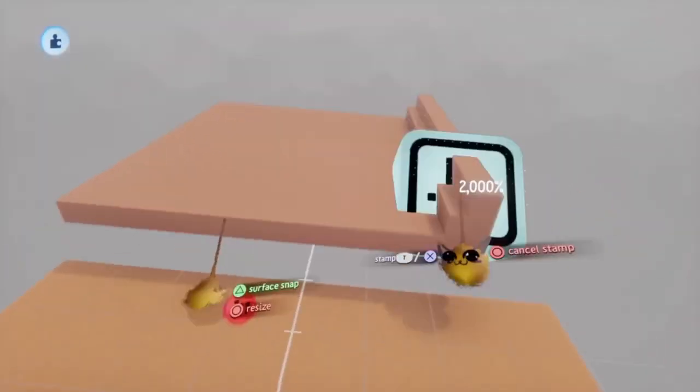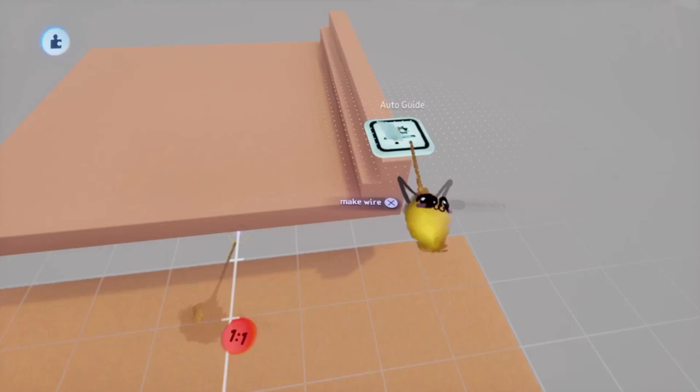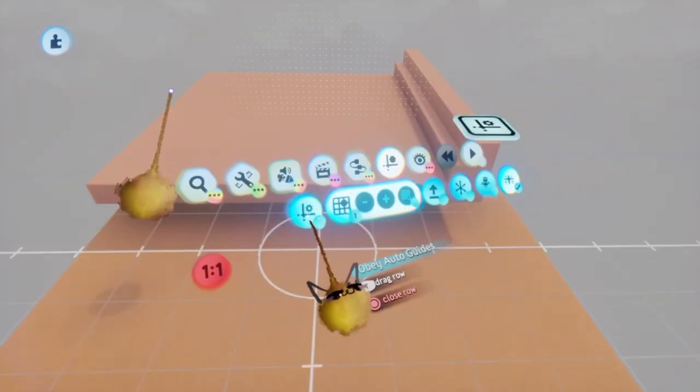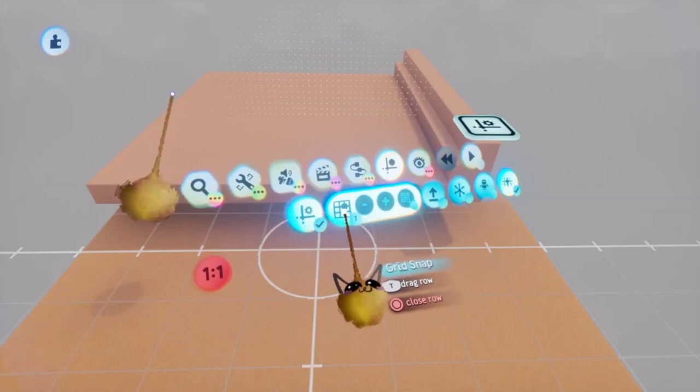Slap an auto guide gadget to the sculpt and set it to surface net. Turn on obey auto guide and now the sculpt will stick to one axis.